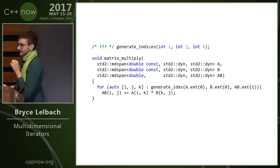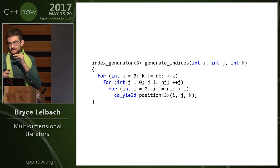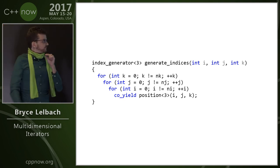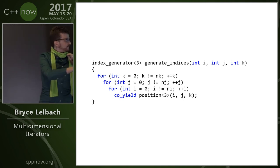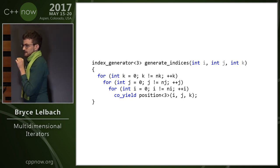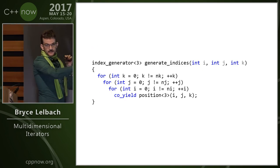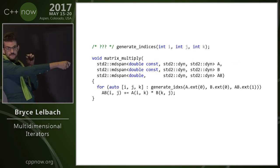Now, how does this work? The answer is coroutines. This is what generate_indices looks like. I've got three nested for loops here, and then I have a co_yield in the center here. What the compiler does is it takes these loops right here, and it basically just dumps them in right here.